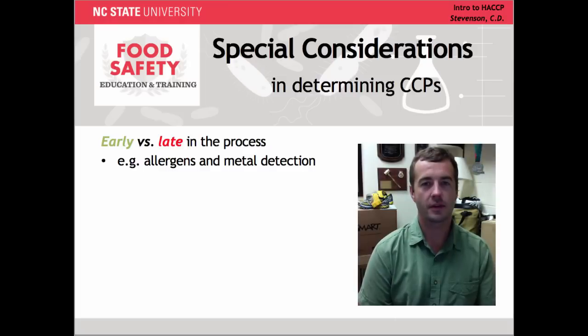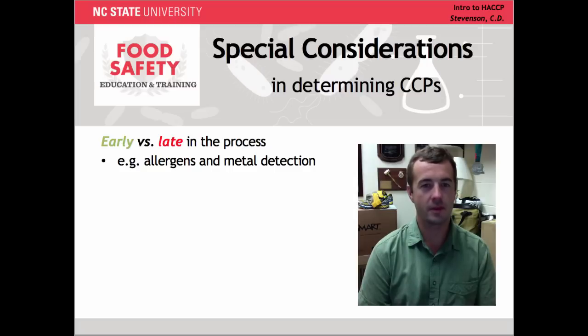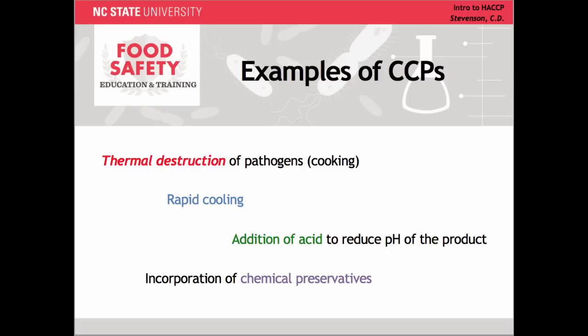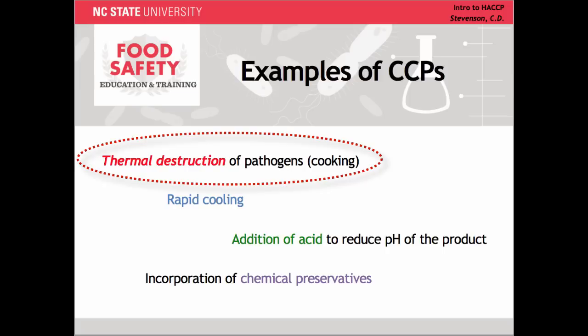Usually, however, the CCP will be placed as late as possible in the process, so there is a terminal treatment that will cover multiple hazards, such as the effect of a cooking step on biological hazards. The most common CCP is a step which provides thermal destruction of pathogens. This is also one of the most effective in that it actually eliminates the hazard.